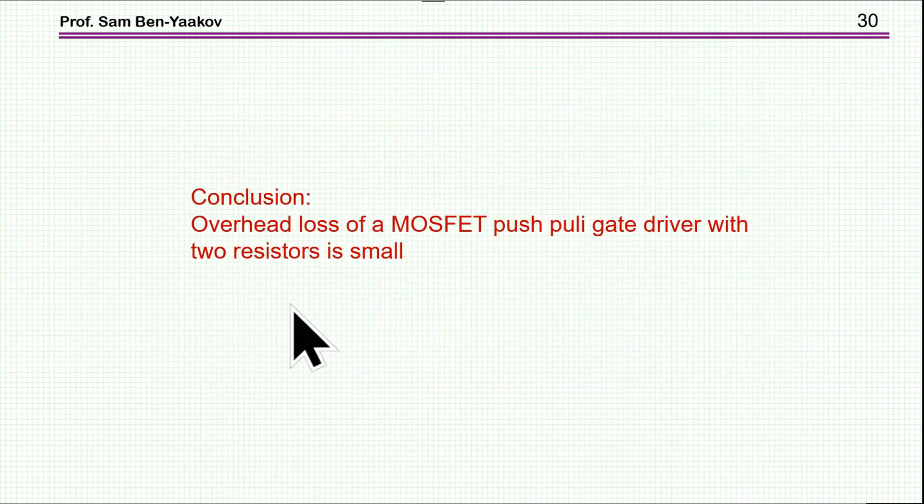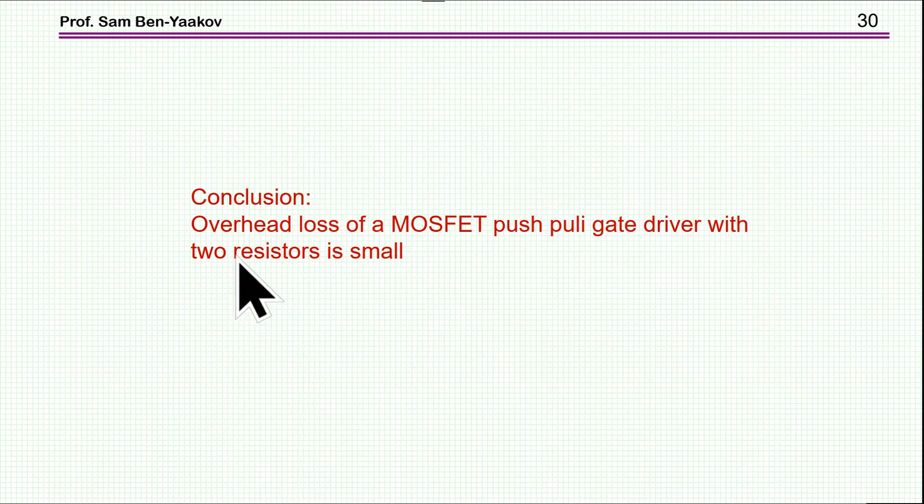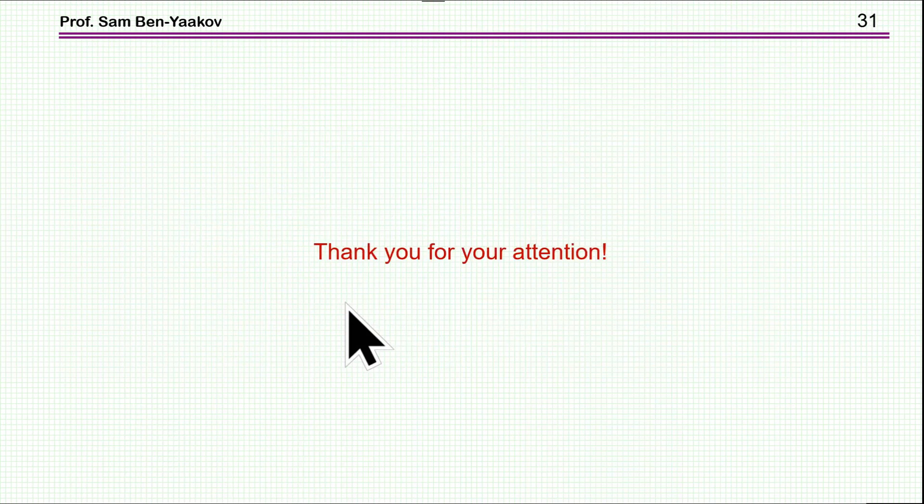So the conclusion here is that the overhead loss of a MOSFET push-pull, the shoot-through, gate driver with two resistors, is really small. And if you'd like this configuration, and it's very nice to have RDS-on rather than the voltage drop of a BJT, then you can see that the penalty is not that much. So this brings me to the end of this presentation. I thank you very much for your attention. I hope you found it of interest, and perhaps it will be useful to you in the future. Thank you very much.